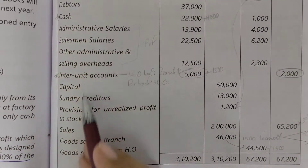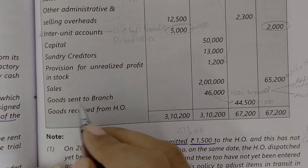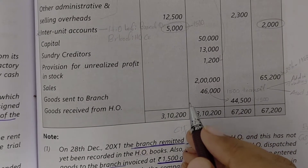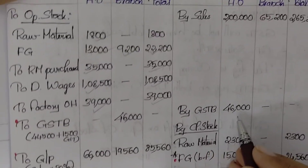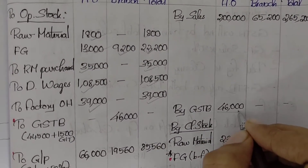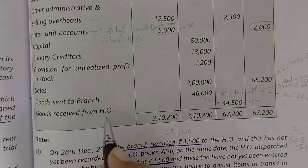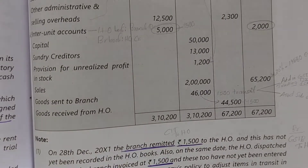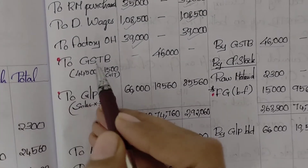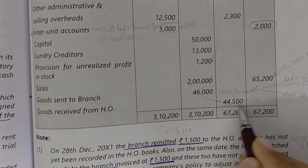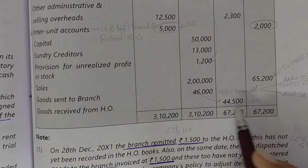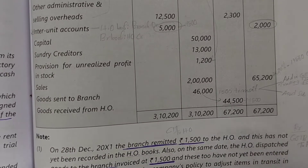Goods sent to branch from the head office: head office account credited 46000. Goods received from head office in the branch books: debit goods received. Goods sent to branch is 46000 and goods received is 44500; the difference of 1500 is goods in transit. So we need to add 1500 to 44500 to reconcile to 46000 — the goods in transit adjustment.